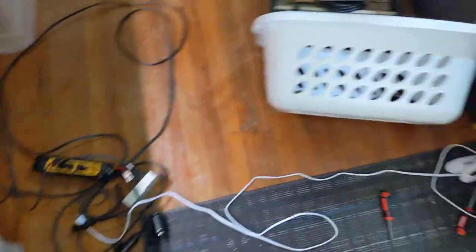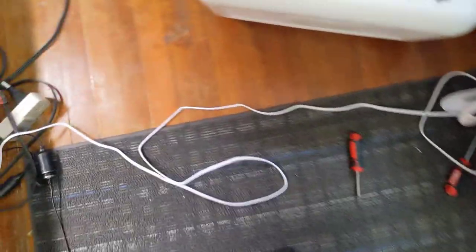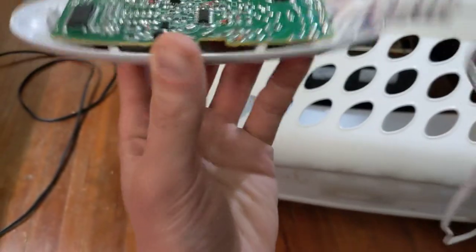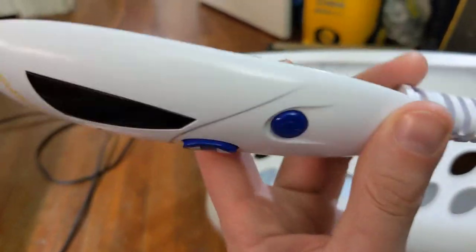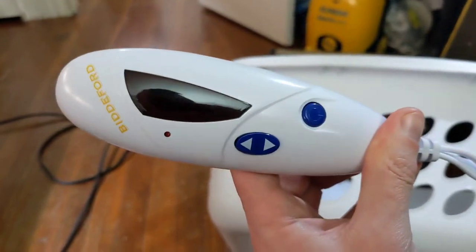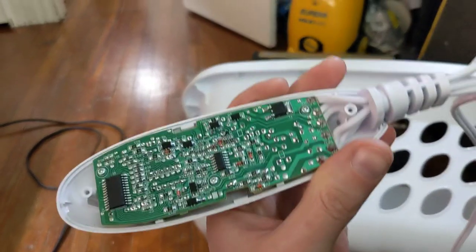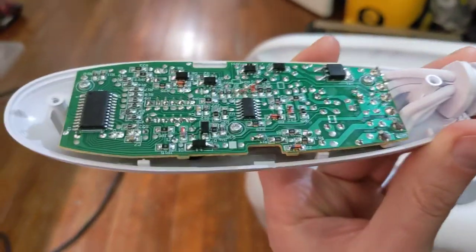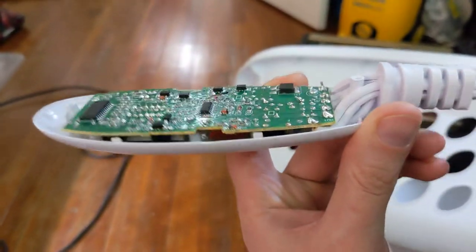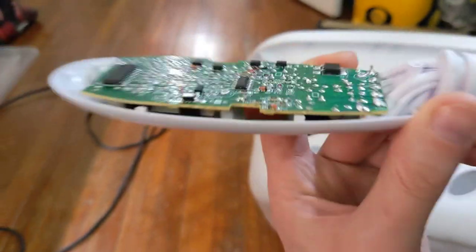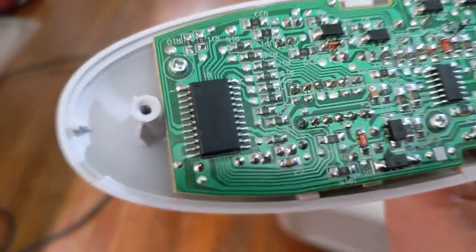But when I was running it, there was a bit of an issue. I started smelling that magical smell that most of us who work with electronics know all too well - the magic smoke aroma was being emitted from the vicinity of this control device. This is the controller for the electric blanket.